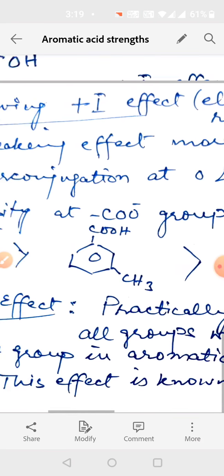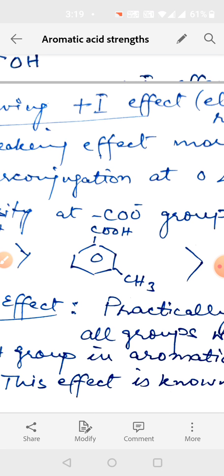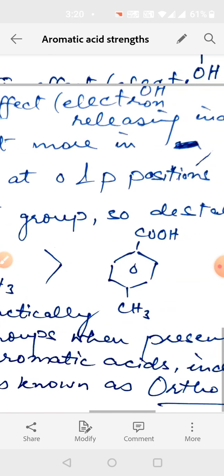Because electron density at meta increases. When it releases electrons, it becomes weaker. All are weaker than benzoic acid. So meta is strongest, then para.